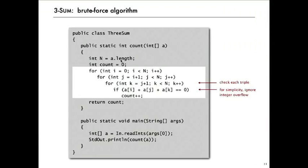N is the number of integers, that's the length of the array. We'll start with a variable count equals zero. And then a triple for loop that checks each triple i, j, k. We go i from one to N, j from i plus one to N, and k from j plus one to N, so that we get each triple just once.